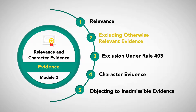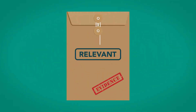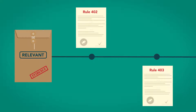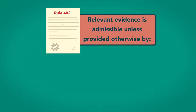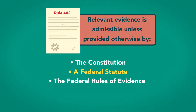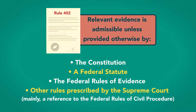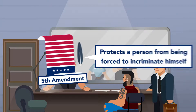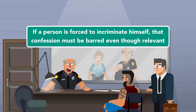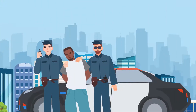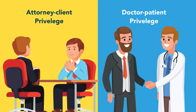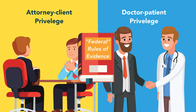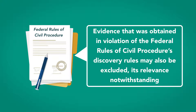Excluding otherwise relevant evidence. Even if relevant, evidence must still pass hurdles presented by Rules 402 and 403. Rule 402 provides that relevant evidence is admissible unless provided otherwise by the Constitution, a federal statute, the Federal Rules of Evidence, or other rules prescribed by the Supreme Court, which is mainly a reference to the Federal Rules of Civil Procedure. For example, the Fifth Amendment protects a person from being forced to incriminate himself; thus, if a person is forced to incriminate himself, that confession must be barred, even though relevant. Fruits of illegal searches and seizures are barred by the exclusionary rule for the same reason. Privileges, such as the attorney-client and doctor-patient, are also used to exclude otherwise relevant evidence under Article 5 of the Federal Rules of Evidence. Moreover, evidence obtained in violation of the Federal Rules of Civil Procedure's Discovery Rules may also be excluded, its relevance notwithstanding.